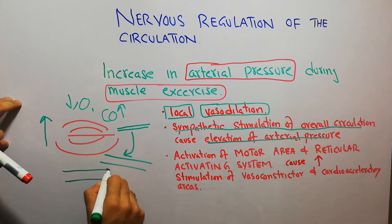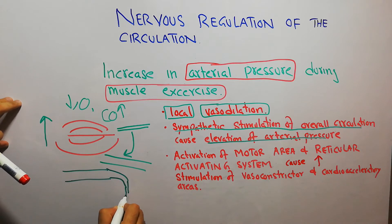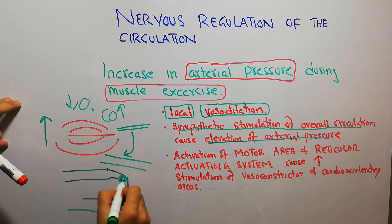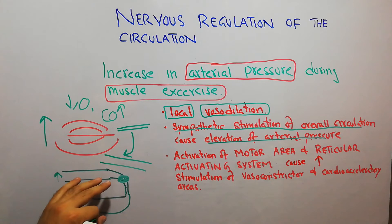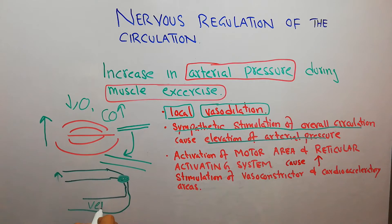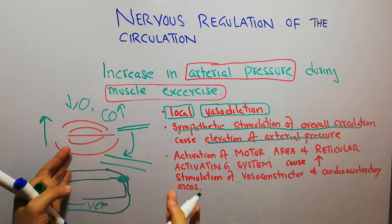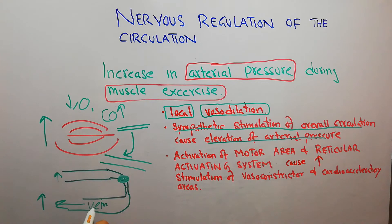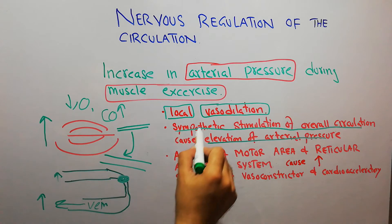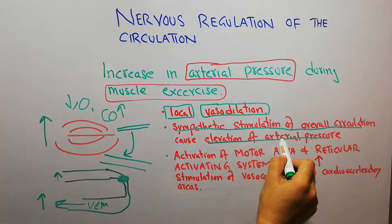Sympathetic stimulation of the overall circulation occurs and leads to elevation of arterial pressure. When sympathetic stimulation occurs via the vasomotor center in the brain, it leads to arteriolar constriction, which raises pressure in the arteries because peripheral resistance develops. It also squeezes the veins, pushing blood toward the heart, increasing venous return. The heart gets stretched, pumps more, and this further increases arterial pressure.